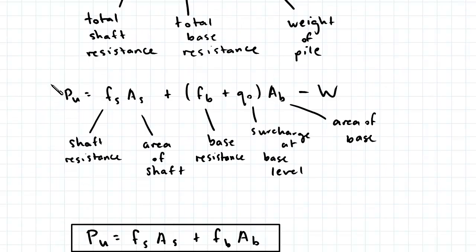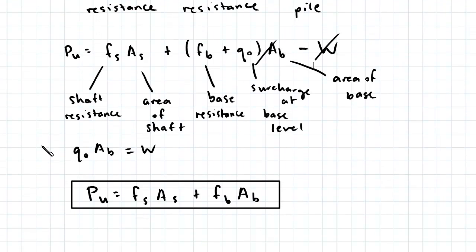We can now assume that the product of the surcharge at base level and the area of the base, so Q0AB, is equal to the weight of the pile and hence these two terms cancel out. And we are then left with this expression for the ultimate axial pile capacity.